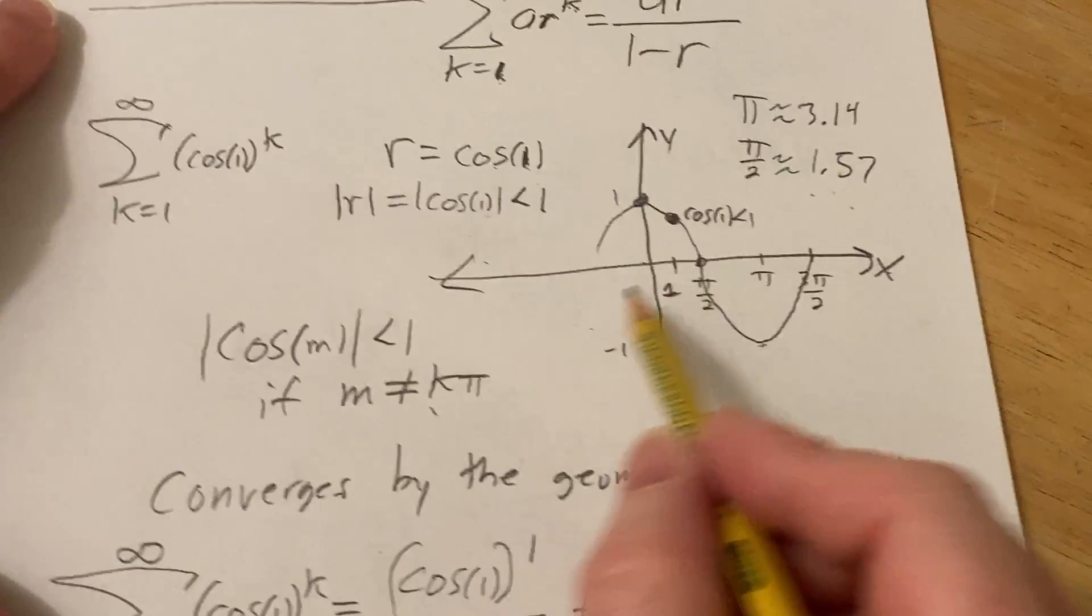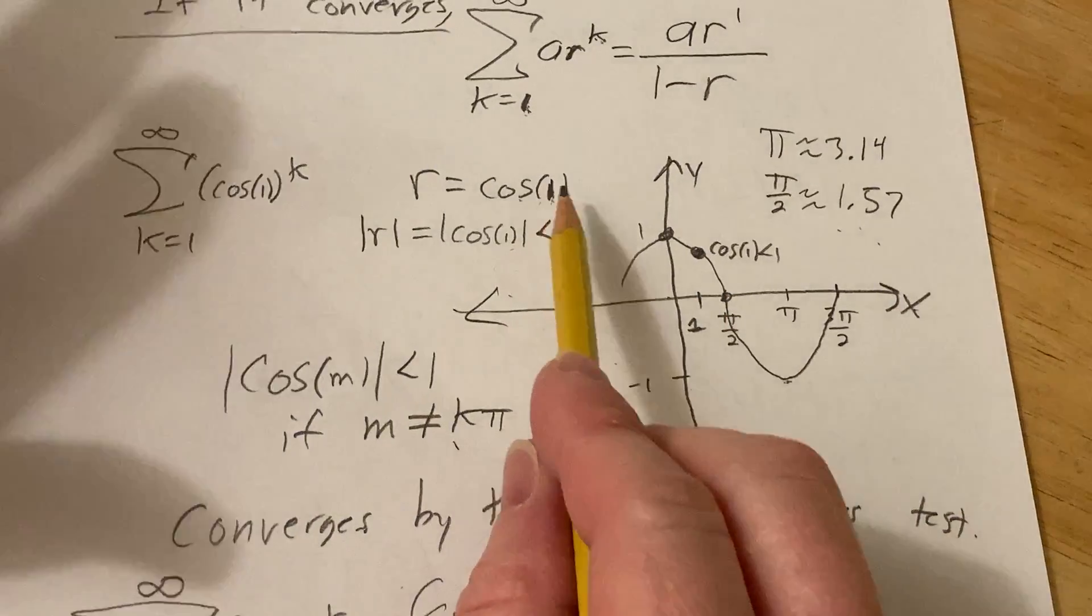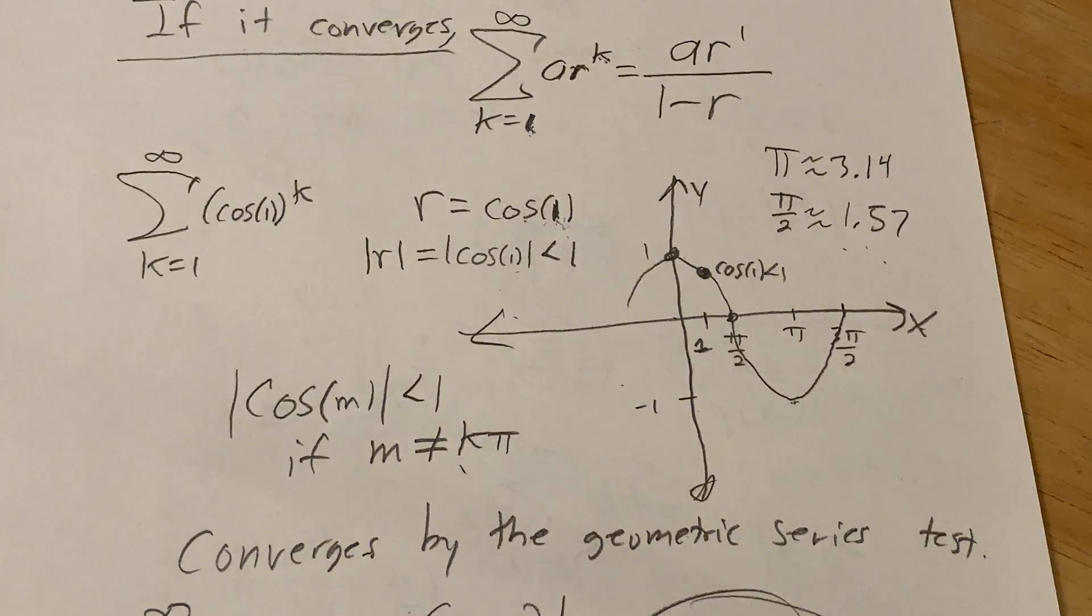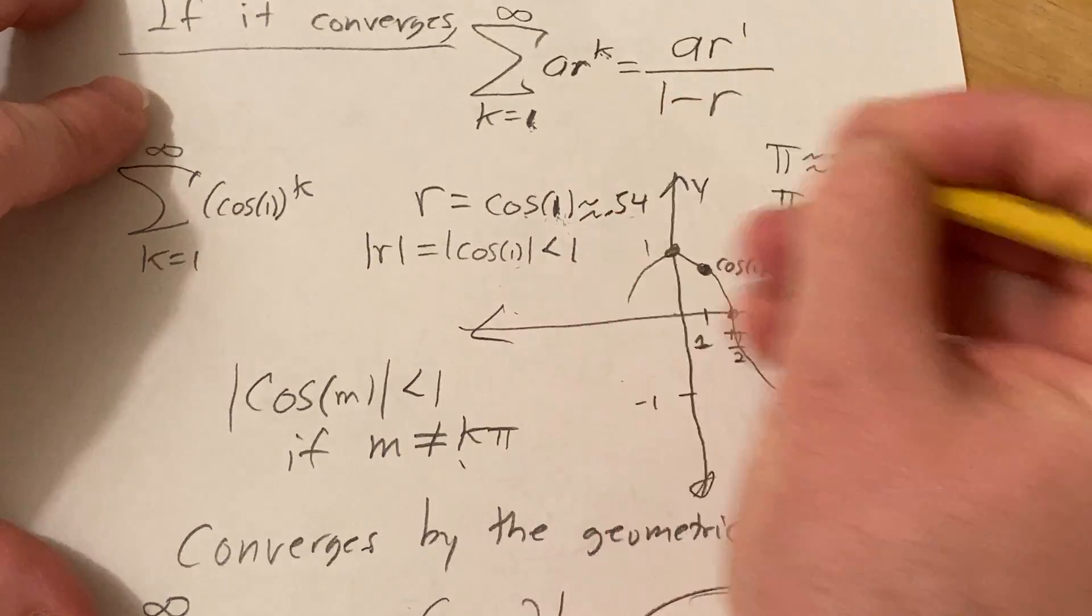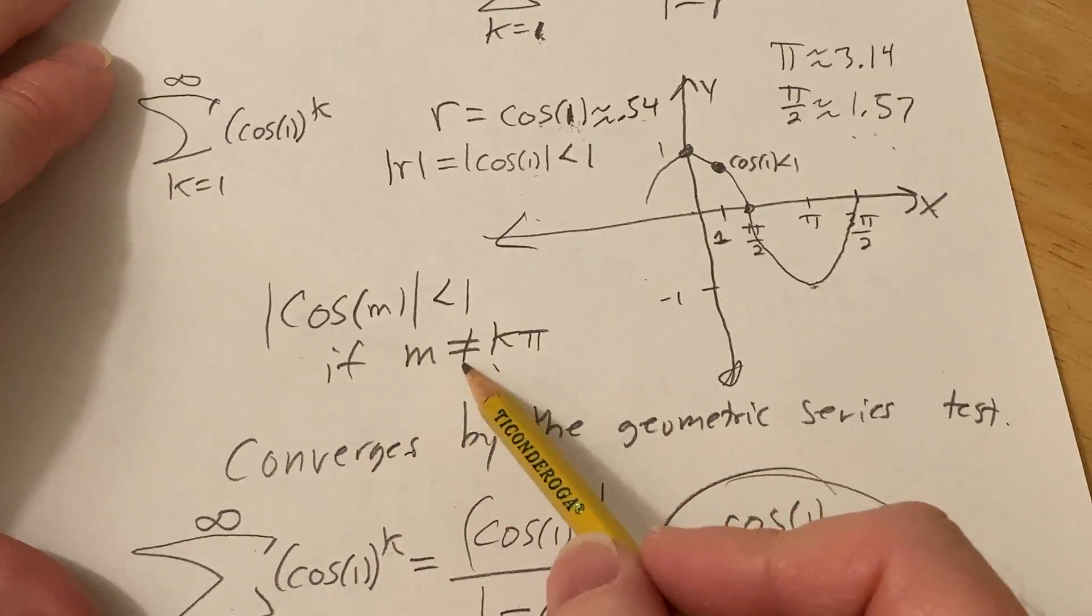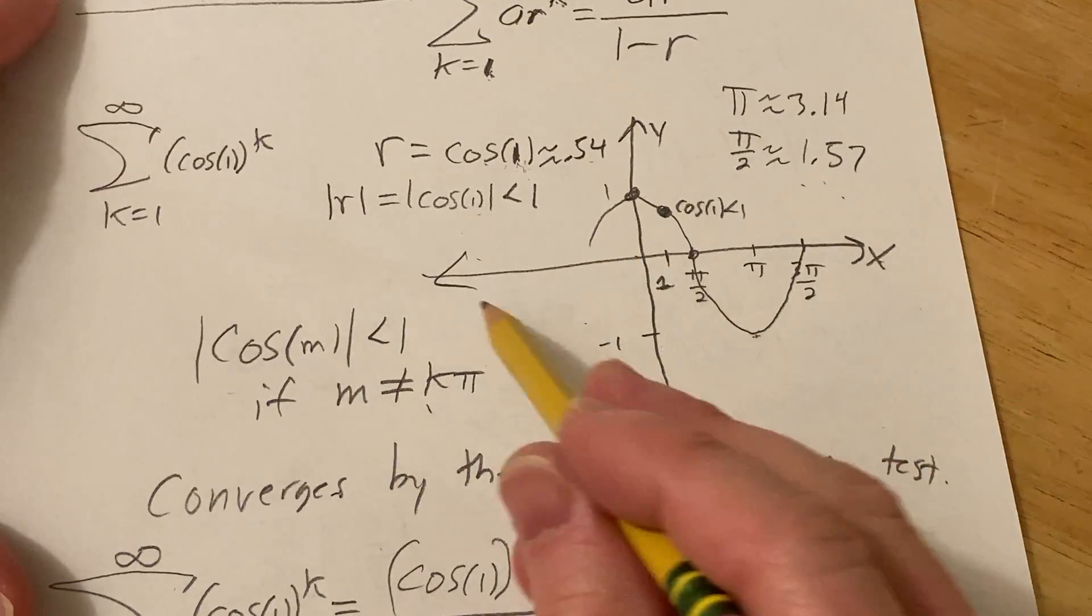You know, if you don't want to go through all this, you can just put this in your calculator. I actually have a calculator here. Let's see, cosine of 1, roughly 0.54, right? So you can avoid all of this and this little statement here about m not being a multiple of pi. I just thought it'd be cool.